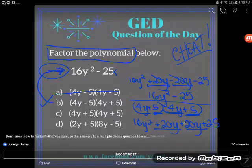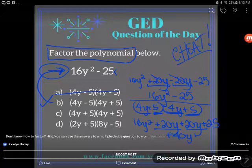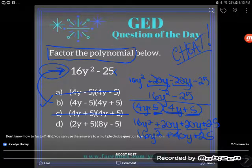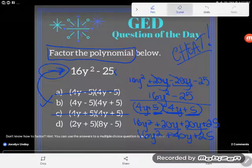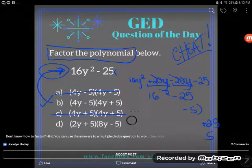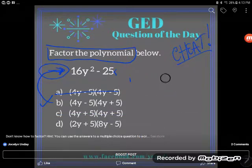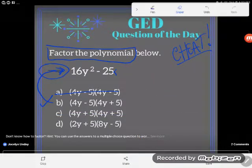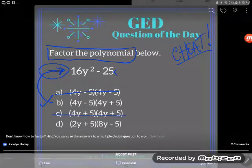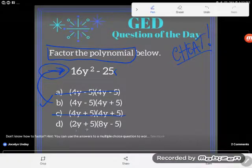And we can see here when we combine our like terms, positive 20 and positive 20, we would get positive 40y. Nothing else changes. They just drop down. Does that match? No, it sure doesn't. And let's give myself a little space here to check the last option just to make sure. So I ruled out C. I'm going to multiply D again.